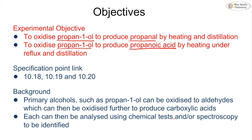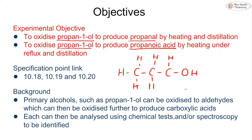For the propanal we use distillation, and for the propanoic acid we use reflux. Propan-1-ol has a primary alcohol structure. Primary alcohols can undergo two stages of oxidation: firstly to an aldehyde, and then secondly to a carboxylic acid. We can then carry out chemical tests or spectroscopy to identify them.